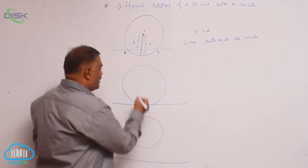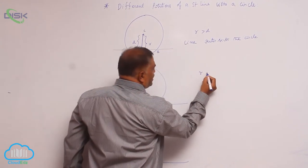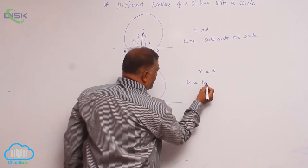When the radius is equal to the perpendicular distance, automatically R is equal to D, and the line touches the circle.